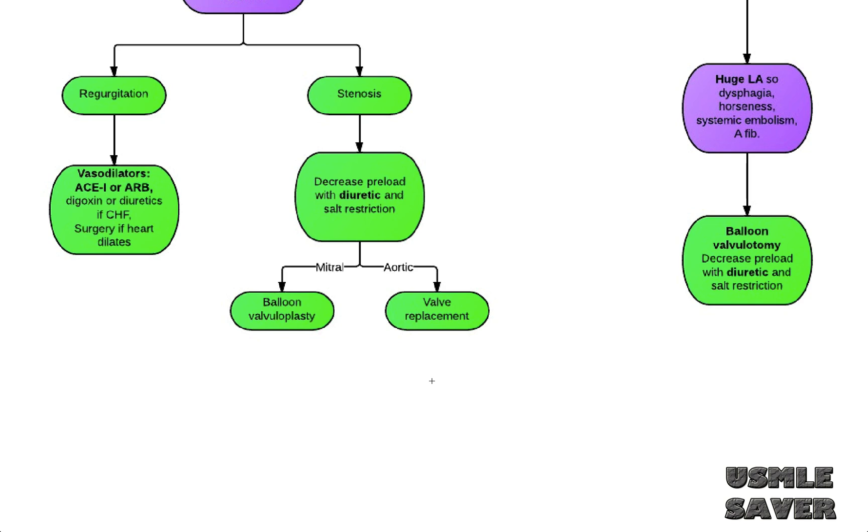You also want to know where this murmur radiates to. So all aortic valve murmur radiates to your carotids and all mitral murmurs radiates to your axilla. So from this information, you can figure out which valve they're talking about.